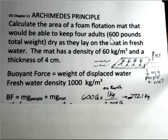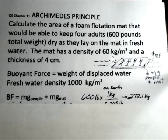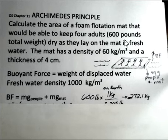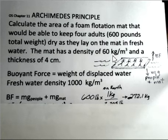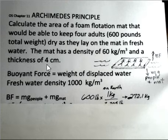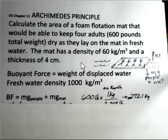You might think we don't have to calculate the weight of the people because we're given pounds, but we're going to change the pounds into the kilogram equivalent on Earth. We want to do a metric calculation — we have metric numbers coming in and we want to be consistent. The centimeters will be changed to meters during the calculation.